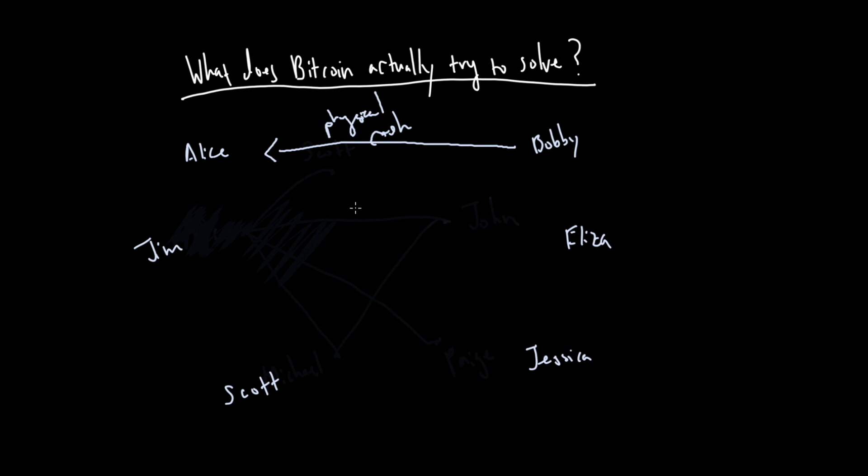So one thing I want to make clear is that Bitcoin isn't special because it's digital. We already have a lot of existing digital systems. We have Venmo, PayPal, Square. Our banks offer digital payments. So all these friends can pay each other without Bitcoin through the digital realm.